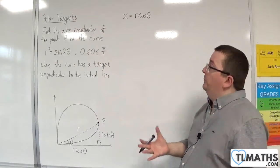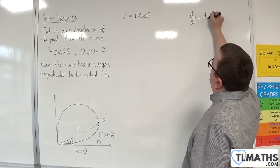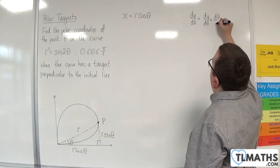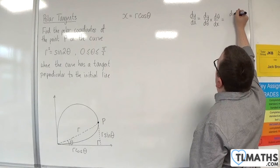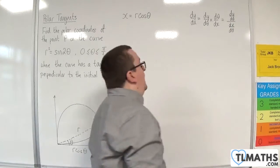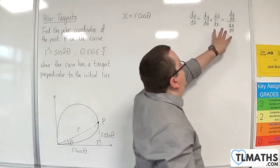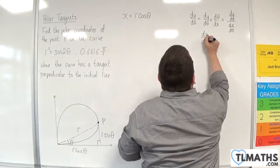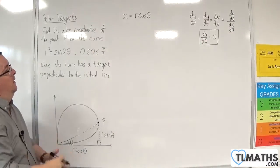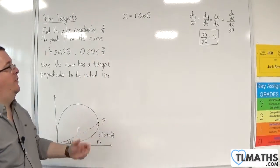As we've seen in previous videos, we're looking at dy/dx, which can be written using the chain rule as (dy/dθ) × (dθ/dx), which we can rewrite as (dy/dθ) / (dx/dθ). Because we are looking at a tangent that is perpendicular to the initial line, we need dx/dθ to equal 0. That is why we need x = r cosθ — so that we can differentiate to get dx/dθ.